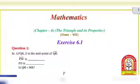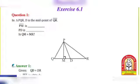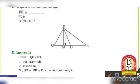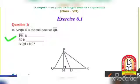Today we are going to learn Exercise 6.1 Question No. 1. In Question No. 1, there is one figure given — triangle PQR — having height PM and median PD. Here QD is equal to DR, so QD is equal to DR and PM is the altitude. PM is altitude means the height of that triangle. PM is the altitude and PD is the median.